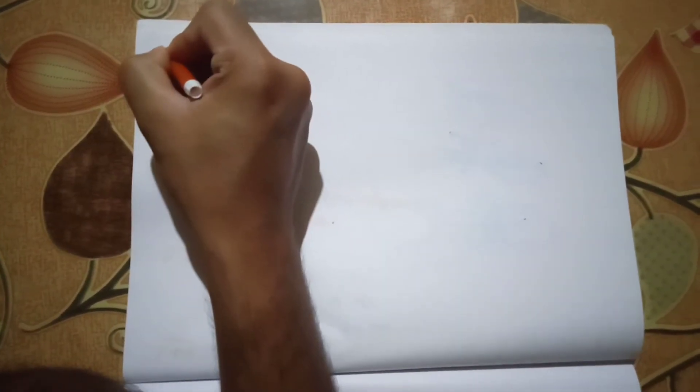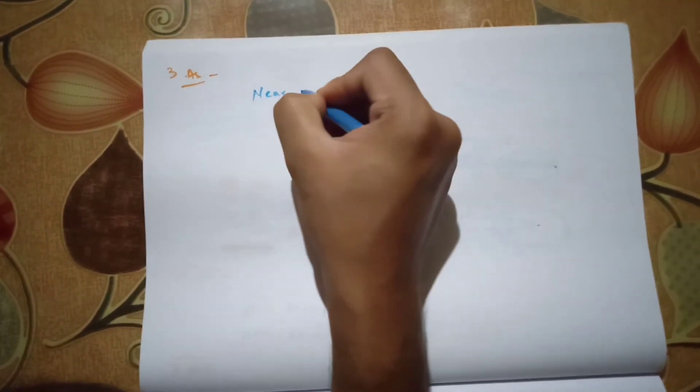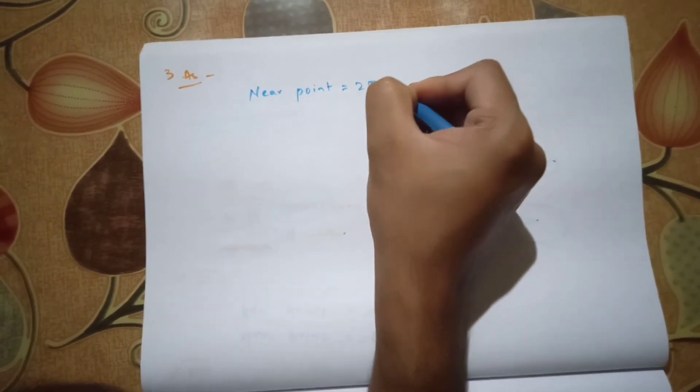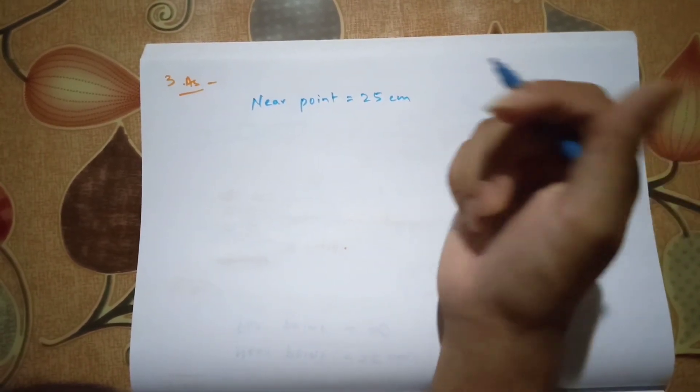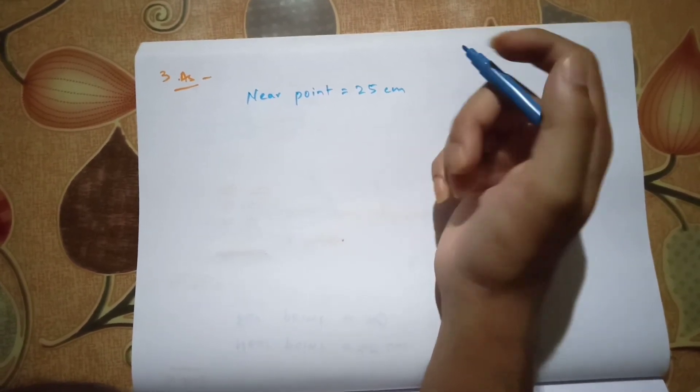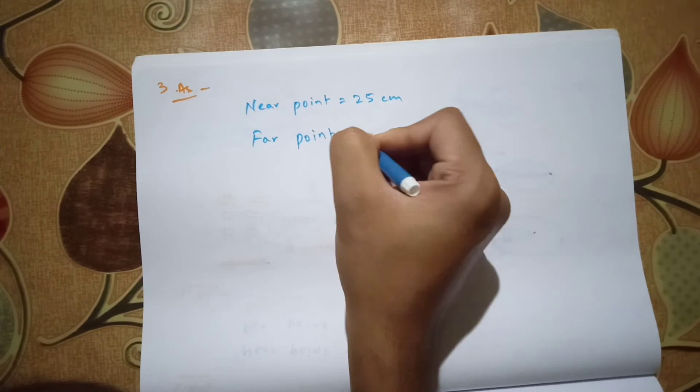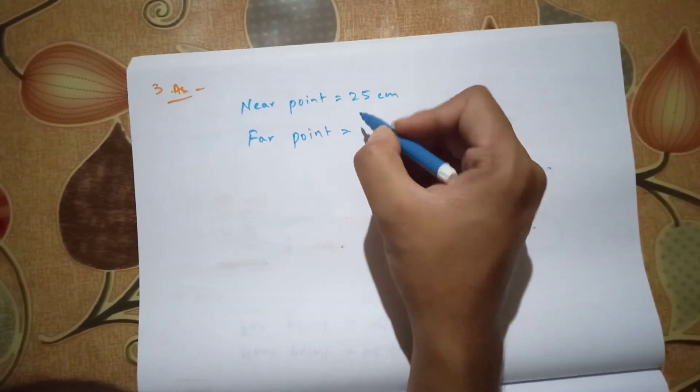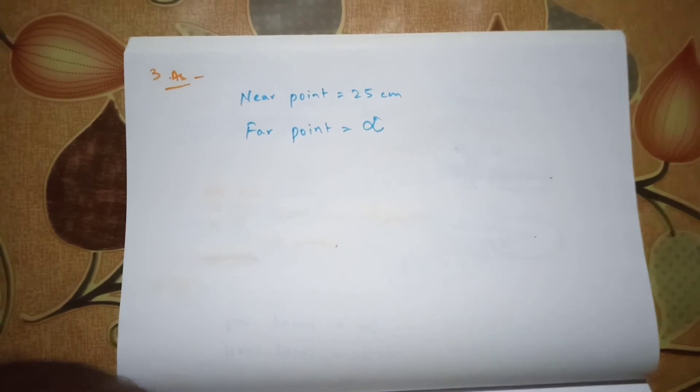Now the next question is question number 3. It is asked about what is the far and near point of the human eye with normal vision. We have studied earlier that the near point of a human eye is 25 centimeters. Closer than 25 centimeters, we will not be able to see the image. It will cause strain to our eye and our eye will pain. Now what is the far point? The far point of any eye is infinity, because our eye is able to see objects as far as they are.